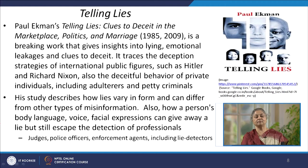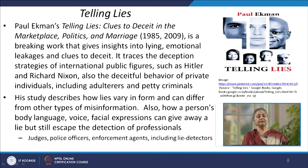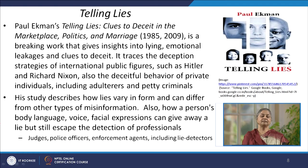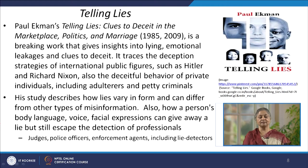In this book, Ekman has traced the deception strategies of various international public figures — for example, Adolf Hitler and Richard Nixon — and has also looked at the deceitful behavior of various private individuals including certain petty criminals as well as adulterers to understand the difference in macro and micro expressions. His study describes how lies vary in form and can differ from other types of misinformation. He has also looked closely at how an individual's body language, voice, and facial expressions in particular can give away a lie, and people who are sensitive to micro expressions can understand these lies.